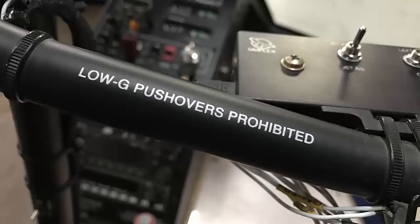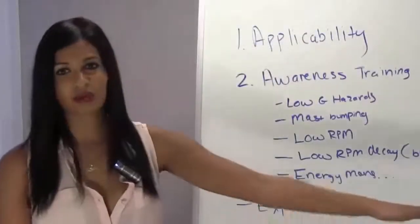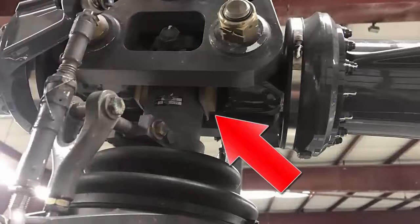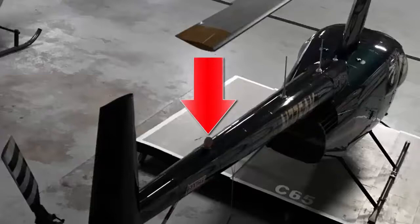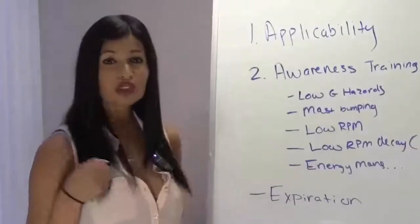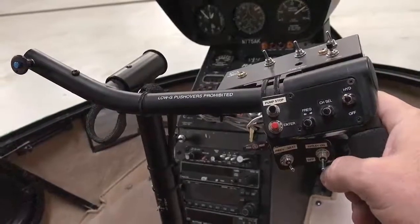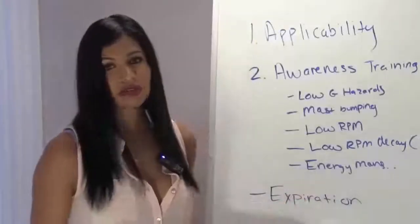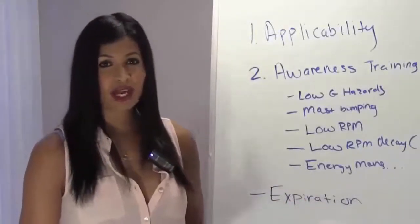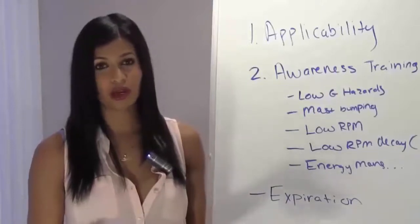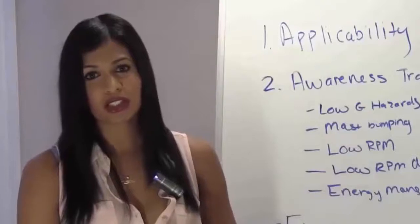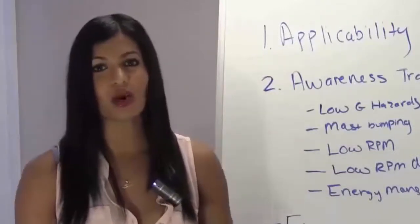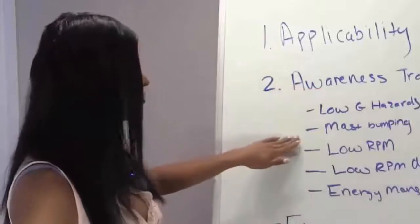Low-G hazards — what is that? A low-G hazard is a condition of weightlessness. It is a hazardous condition that can lead to mast bumping. Mast bumping is simply when the blade contacts the mass of the helicopter, or even the tail cone chopping it off. This happens when you push forward on the cyclic and throw the center of gravity off. You'll feel yourself come up out of your seat, and the helicopter will start to roll in the direction of tail rotor thrust, or to the right. The pilot instinctively wants to correct for the roll, which then leads into mast bumping.